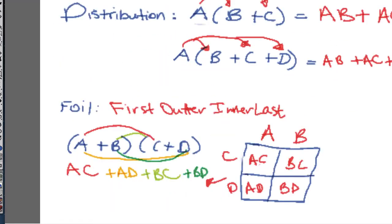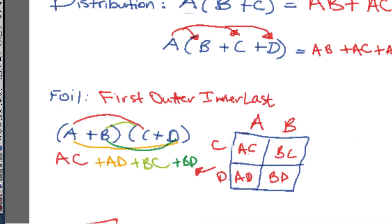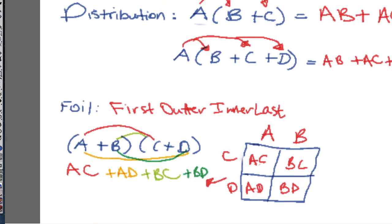So if you FOIL, it's first, outer, inner, last, or you can use that little Punnett square, the little table there.